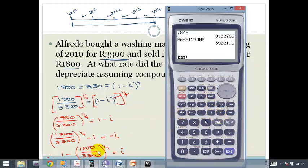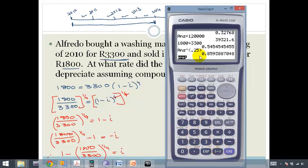Right, so now let's get out our calculator and see what we can get. First of all, let's do the bracket bit. So we're going to go 1,800 divided by 3,300 equals, and we're going to go to the power of 0.25, and that gives me 0.86.